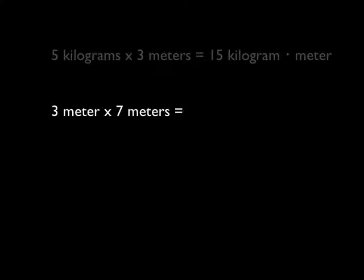3 meters times 7 meters. Again, the numbers are just what you'd expect. 3 times 7 is 21. Meters times meters would be meter times meter.